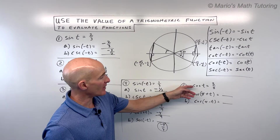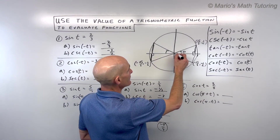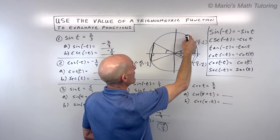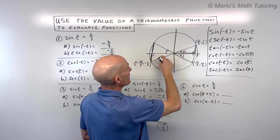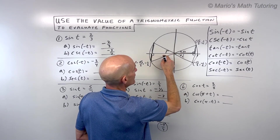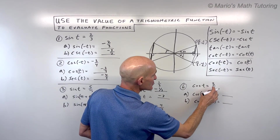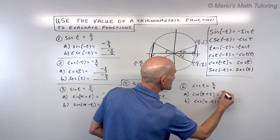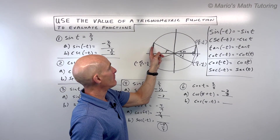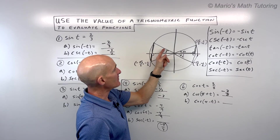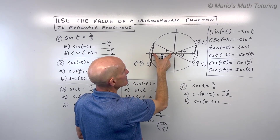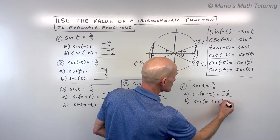The last example: cosine of t equals 3 eighths. Remember, cosine is the x component in the unit circle. For cosine of pi plus t, the triangles are congruent, but the x component flips from positive to negative — so that's negative 3 eighths. For cosine of pi minus t: pi is 180 and minus t goes clockwise. The triangles are again congruent, but the x component is also going in the opposite direction, so cosine of pi minus t is also negative 3 eighths.